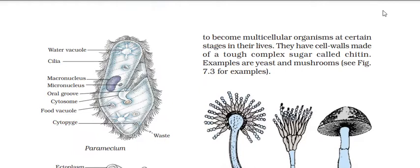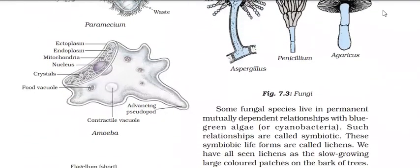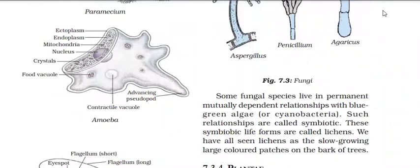Examples are yeast and mushrooms. Some fungi form a mutually dependent relationship with algae, called symbiosis. For example, in lichens, some fungal species live in permanent mutually dependent relationships with blue-green algae, also known as cyanobacteria. Both are benefited — fungus provides living space and water to the alga, and in return obtains food from the alga.